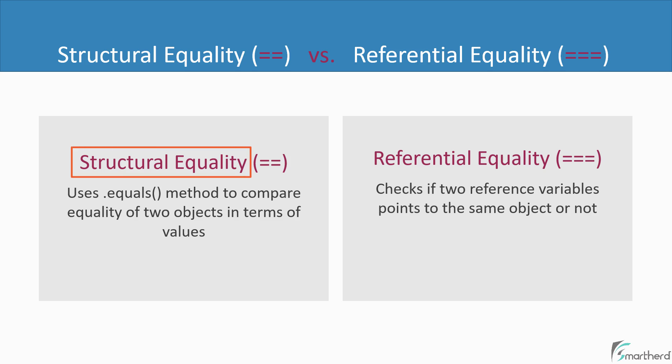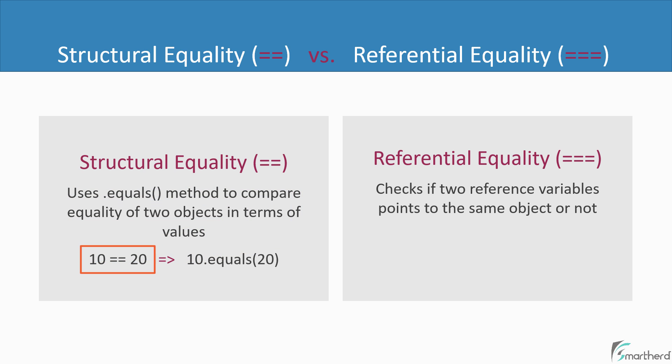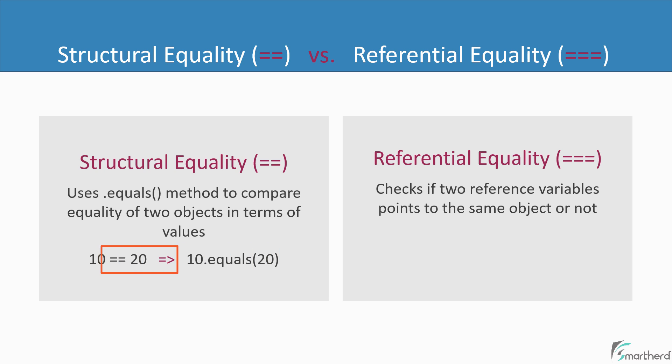Structural equality in Kotlin is represented by the double equals operator. It basically uses the equals method to compare two objects only in terms of their values — we only compare values using this operator. For example, if you use 10 == 20, then it actually compares the two values using the equals method, and this expression will return false as they are not equal.